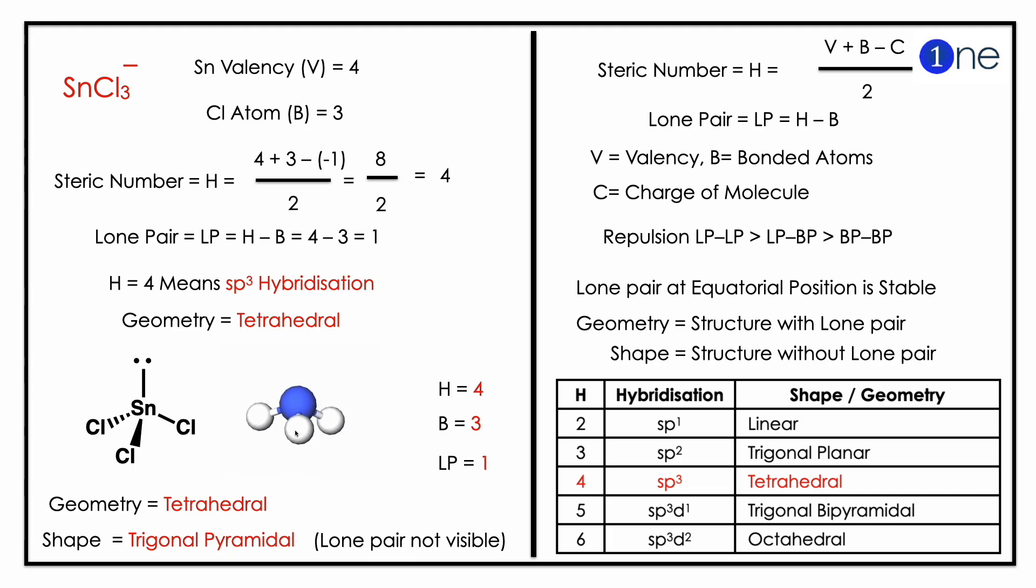Before finding the shape, you should know the lone pair. The lone pair is LP = H - B, which equals 1. sp3 hybridization with one lone pair, so three chlorine atoms occupy the tetrahedral corners with one lone pair. The geometry is tetrahedral, but the shape is trigonal pyramidal.